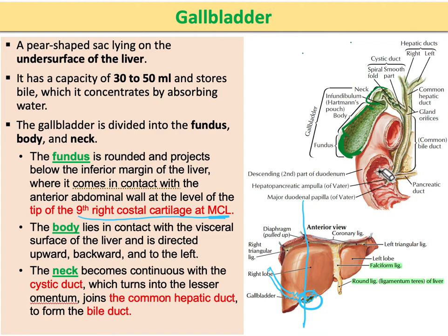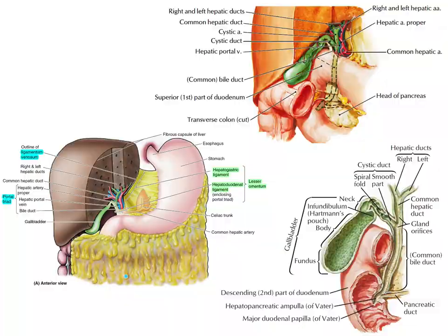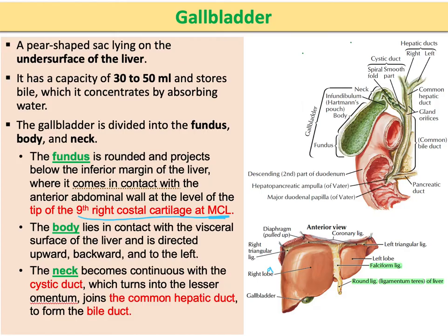The body of the gallbladder lies in direct contact with the visceral surface of the liver. The gallbladder is directed upward, backward, and a little to the left. The neck of the gallbladder is continuous with the cystic duct.